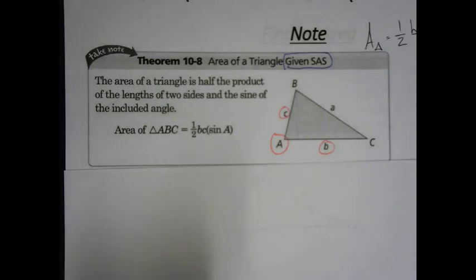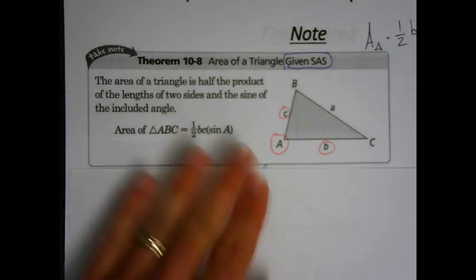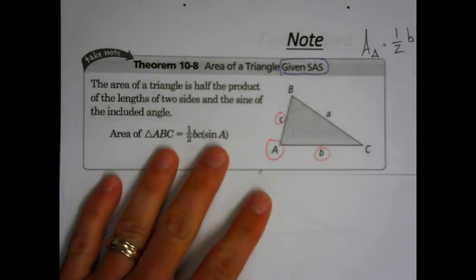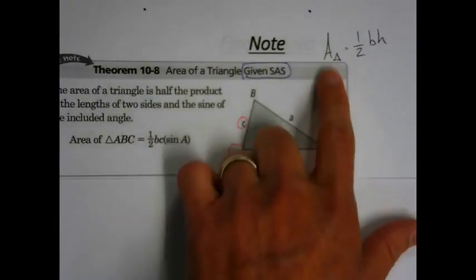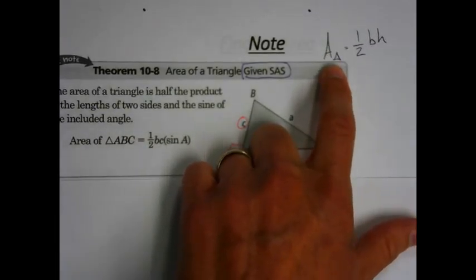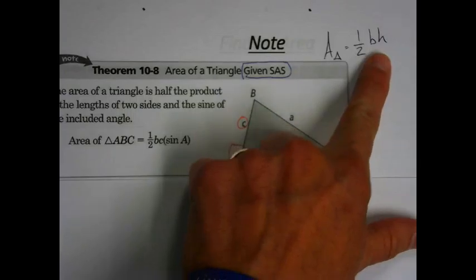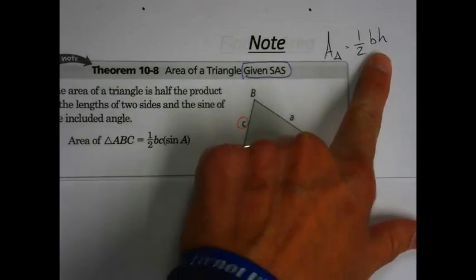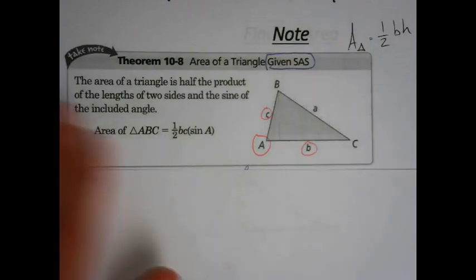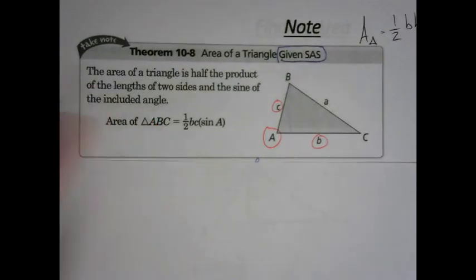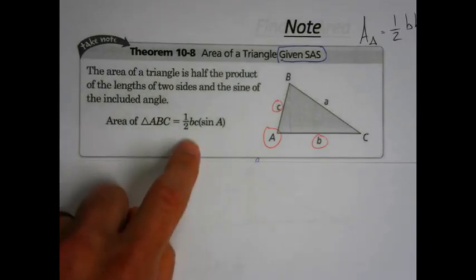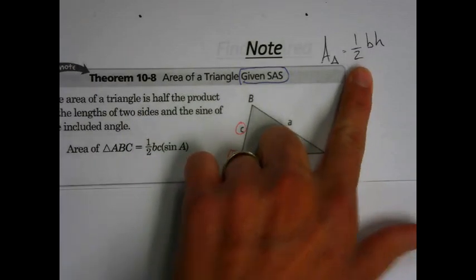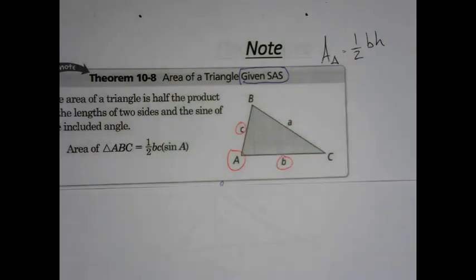Now you might be thinking — holy cow — how are we going to have a whole new formula for the area of a triangle? It was really simple: one half base times height. And I say to you, well, it's the same thing. If you want to wrap your head around this, it's one half base times height — let's work with that.